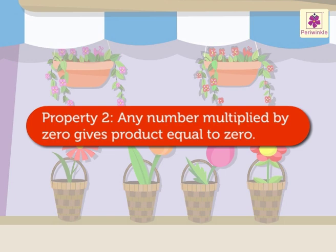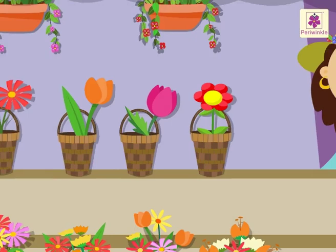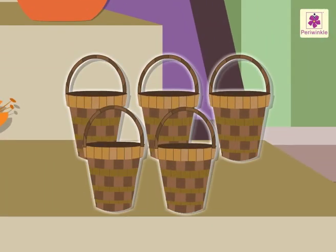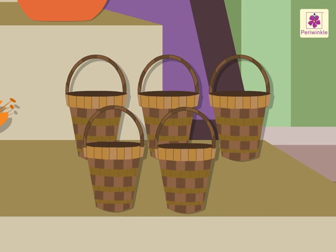Property 2: Any number multiplied by 0 gives product equal to 0. Look! There are five flower baskets. There are zero flowers in each basket.